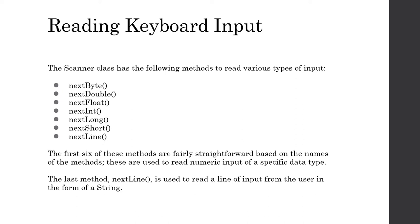There are a couple of different methods we'll use to read various types of input: nextByte, nextDouble, nextFloat, nextInt, nextLong, nextShort, and nextLine. The first six are fairly straightforward — we use those to read numeric input of a specific data type, one for each of the six numeric data types. But the seventh one, nextLine, is going to be used to read an entire line of input from the user, and it's going to be interpreted as a String. Since the name we want to get from the user will be a String, nextLine is what we'll end up using.